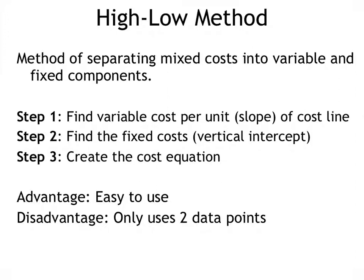So there are three steps really to this process. The first one will find a variable cost per unit which is the slope of the cost line, and then we'll find the fixed cost which is the vertical intercept. If you think back to those graphs we looked at earlier in the previous video, you think about that vertical intercept where the mixed cost or total cost line hit the y-axis, that's where fixed costs are. And we'll create the cost equation.